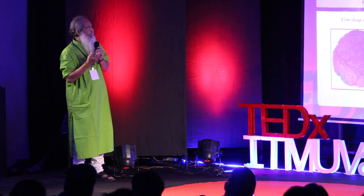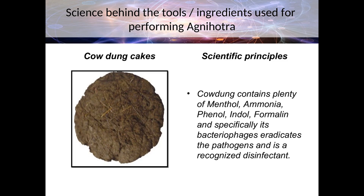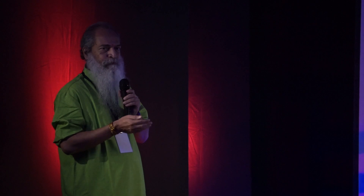Cow dung is a remarkable substance. We are talking about B12 deficiencies — the richest source of B12 today is cow dung, and not many people are aware of that. Cow dung contains plenty of menthol, ammonia, phenol, indole, and formalin; specifically, its bacteriophages eradicate pathogens, and it is recognized as a disinfectant. There is enough experimentation done in the scientific community on this.